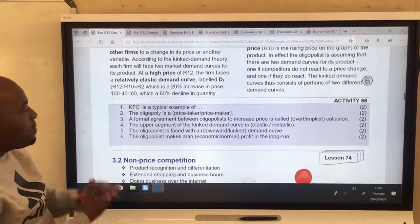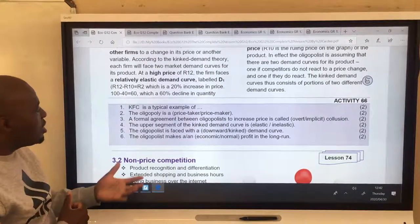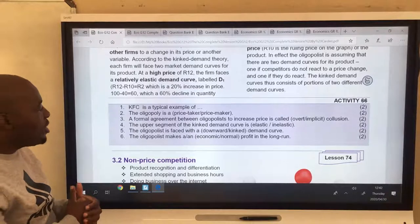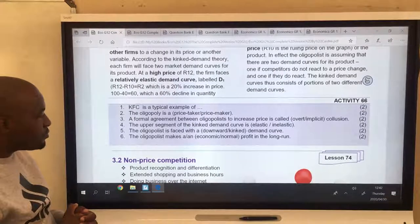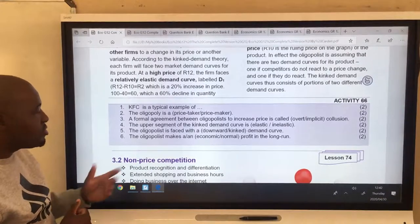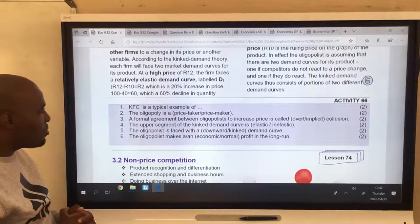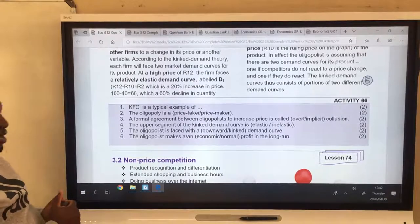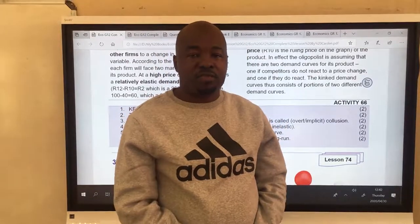So this concludes the lesson. And we have number one to six. KFC is a typical example of, do you think it's monopoly? Do you think it's whatever? The oligopoly is a price. Do you think it's a price maker or price taker? A formal agreement between oligopolists to increase price is called, what kind of collusion? And this one is a legal one. The upper segment of the kinked demand curve, do you think it's elastic or inelastic? The oligopolist is faced with, do you think the demand curve is kinked or downward slope? The oligopolist makes A or N, economic or normal, profits in the long run. So this sums our lesson. Lesson number 73. I'll see you in lesson number 74.